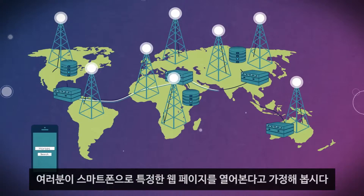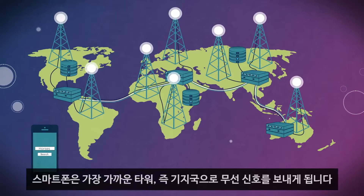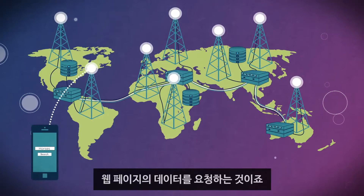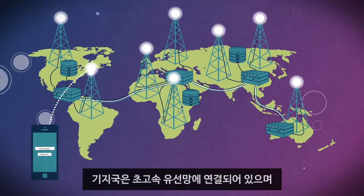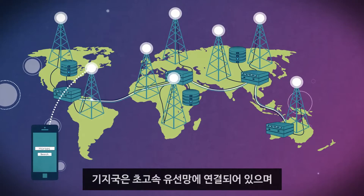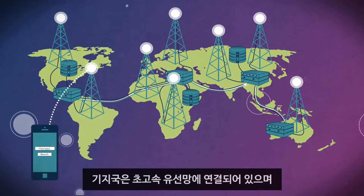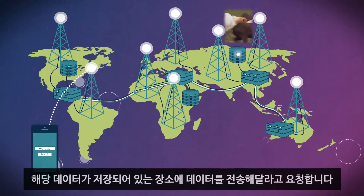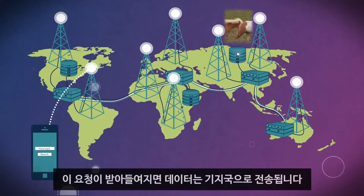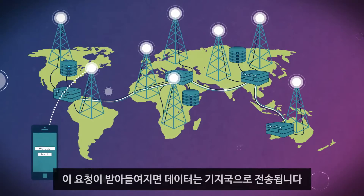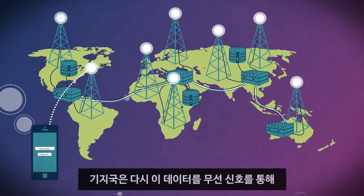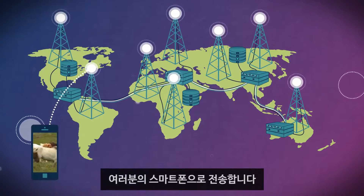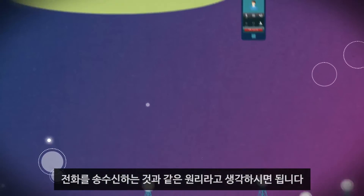Let's use some examples to make sense of all of this. Say you want to open a web page from your phone. The phone sends a wireless signal to the nearest tower or base station, requesting the data for this page. The base station is connected to a high-speed wired network and routes the request to wherever in the world the data for this page is kept. Once the request is fulfilled, the data travels back to the tower, which then sends it back to your phone using a wireless signal.